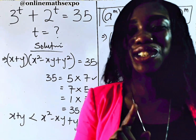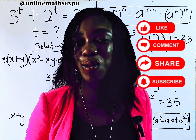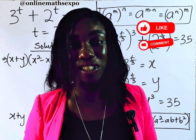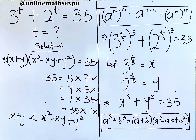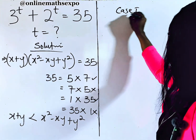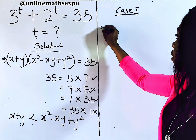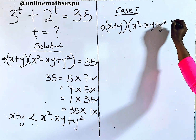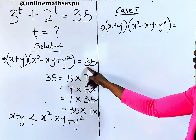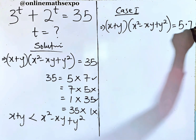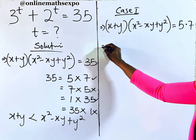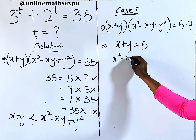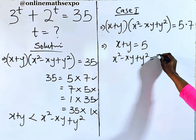We have two cases to work on. For you having watched through this point — don't forget to give this a like and let us know what you feel about this class. If you're still new, hit that subscription button. Now for case one: we set x plus y times x squared minus xy plus y squared equal to 5 times 7. This means x plus y equals 5 and x squared minus xy plus y squared equals 7.